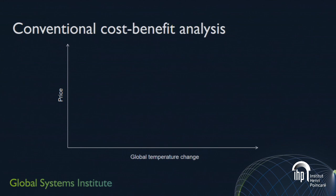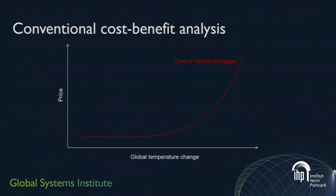Conventional cost-benefit analysis, in very cartoon form, has global temperature change on the x-axis and price/cost on the y-axis. It deals with smooth functions that it assumes are deterministic and well-known. There's something called a damage function — the cost of climate damages. Your typical model like DICE doesn't think that's linear; it thinks it's quadratic. But the empirical foundation for such functions is thin at best.